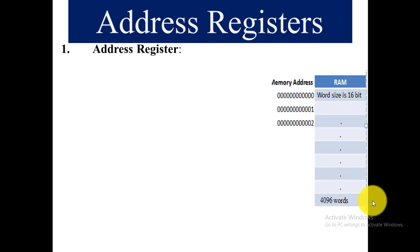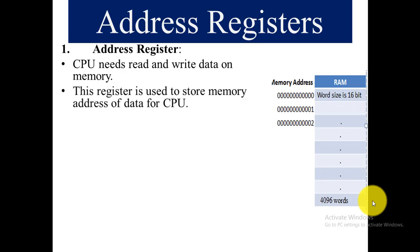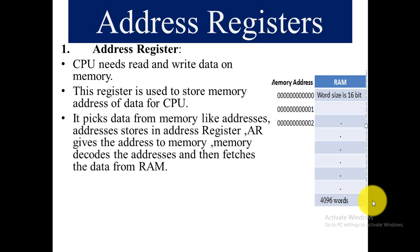The first register is the address register. The address register is a very important register. The CPU needs to read and write data to memory — that is the main task of the CPU. This register is used to store the memory addresses of data that the CPU reads from memory and writes to memory. The address register gives the address to memory, and memory decodes the address and fetches the data from RAM. Its size is 12 bits, because 2 raised to the power of 12 equals 4096.